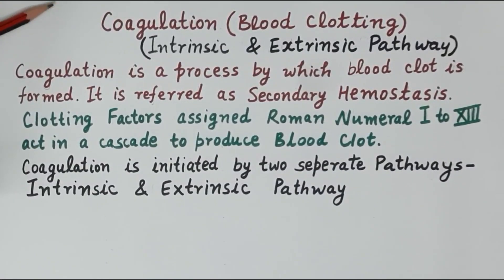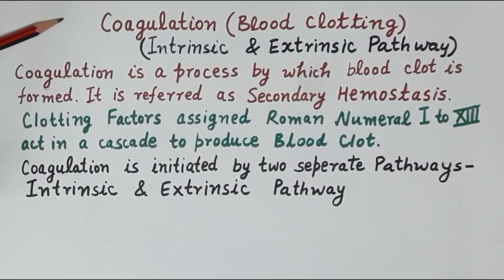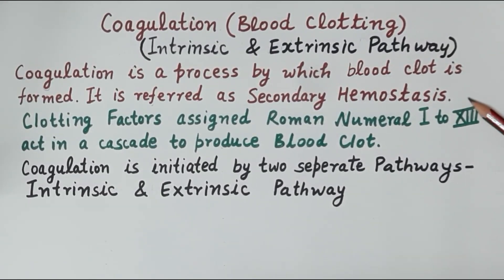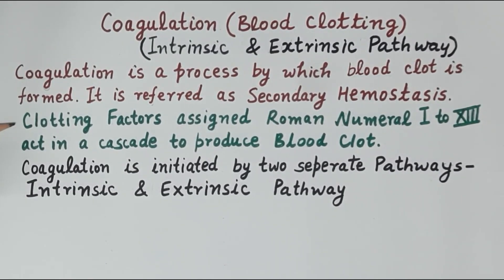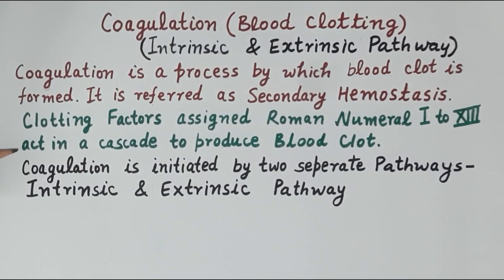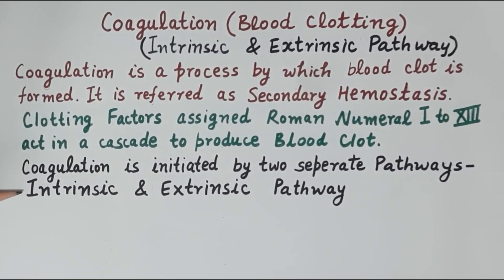Hello students, today we are going to understand the concept of coagulation or blood clotting. Coagulation is a process by which a blood clot is formed; it is referred to as secondary hemostasis. Clotting factors are present in the blood and are assigned Roman numerals 1 to 13. These clotting factors act in a cascade — that is, in a sequence — to produce a blood clot.